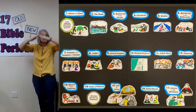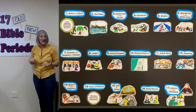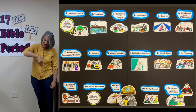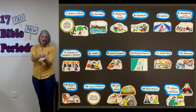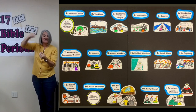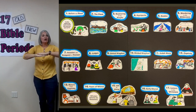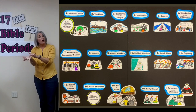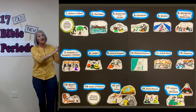Before the flood and then the flood, scattering of the people, patriarchs, exodus, wandering in the wilderness, invasion and conquest of the land, judges, then united kingdom, divided kingdom, Judah alone, then captivity, return from captivity, years of silence, life of Christ, early church, then the letters to the Christians.